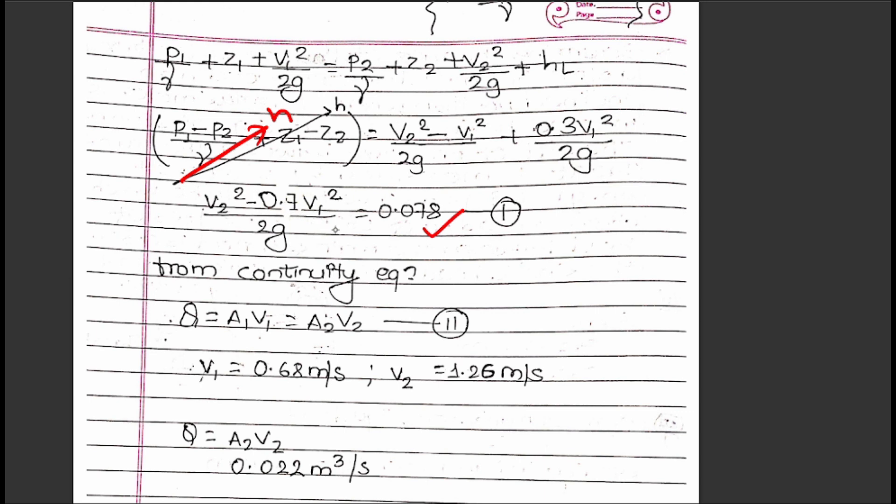From continuity equation, Q is constant, so A₁V₁ = A₂V₂. This means the flow rate is conserved between sections.